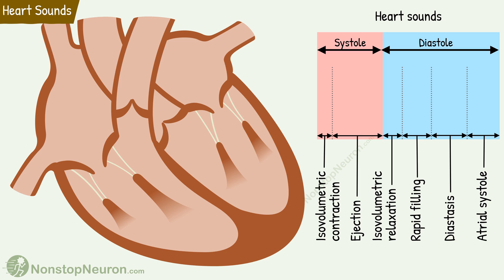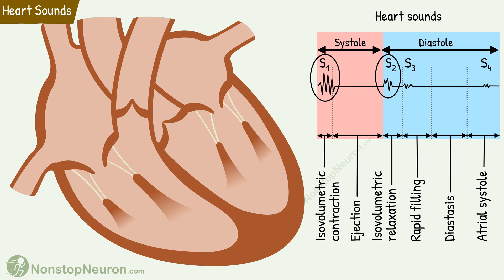Now let's begin our discussion of heart sounds. Four heart sounds are produced at different times during a cardiac cycle: first heart sound, second heart sound, third heart sound, and fourth heart sound. Among them, the first and the second heart sounds are the major or physiological heart sounds — they can be heard with a stethoscope. The third and fourth heart sounds are heard only occasionally; normally they are not audible with a stethoscope and can only be recorded with a phonocardiogram.